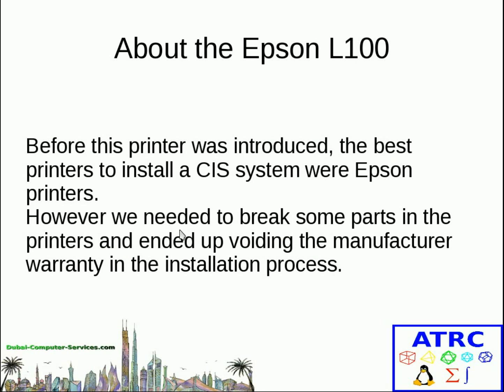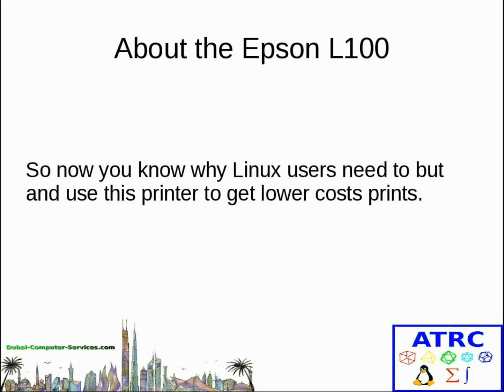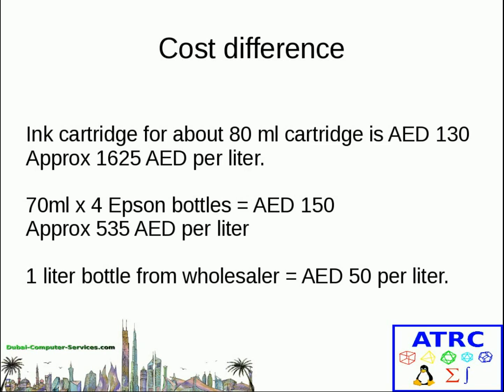So why is this so important? Epson printers were the best printers for installing this system, and then Epson decided they should provide CIS directly from the manufacturer instead of having it as an add-on. Now you know why Linux users need to use this printer to get lower printing costs.